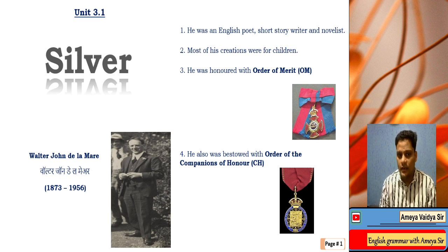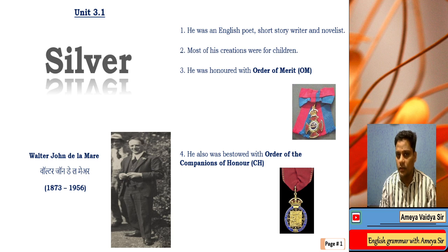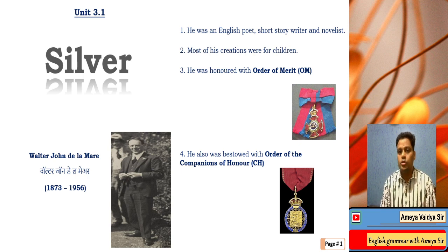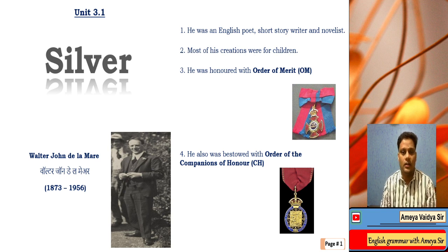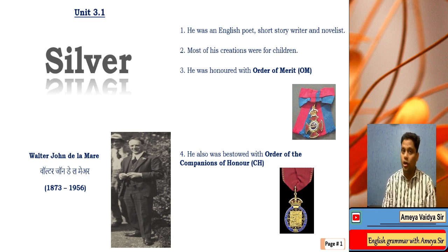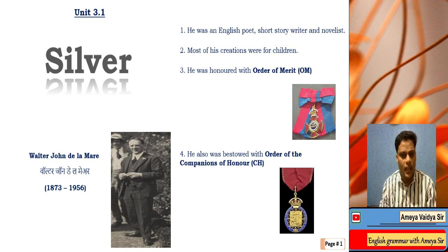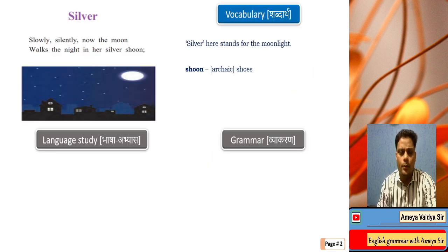The title is 'Silver' and it's written by Walter Jean de la Mare, 1873 to 1956. He was a well-known poet of his time — an English poet, short story writer, and novelist. Most of his creations were for children, which is noteworthy. He was honored with the Order of Merit (OM) and was also bestowed with the Order of Companions of Honor (CH).